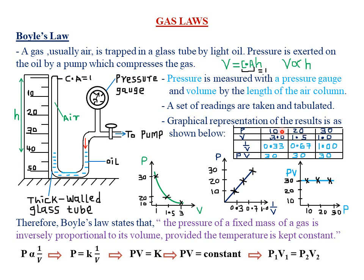When pressure increases, the reciprocal of volume also increases — a direct proportionality. When pressure is 10, 1/V is 0.33; when pressure is 20, 1/V is 0.67; when pressure is 30, 1/V is 1. Plotting these points gives a straight line graph, confirming the direct proportionality relationship between pressure and the reciprocal of volume.